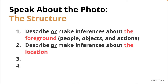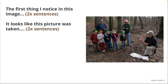The next part is to describe or make inferences about the location. After you explain the foreground, talk about the location using: 'It looks like this picture was taken...' For example: 'It looks like this picture was taken in the forest somewhere. There are a bunch of trees without leaves and the leaves are scattered across the floor, so I imagine this is sometime in the fall or winter. The man has his sleeves rolled up, but everyone else is wearing a hoodie or a jacket, so I imagine it's pretty cold.'